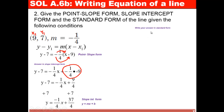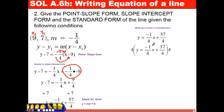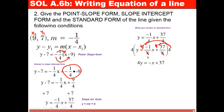Our goal now is to write this into standard form. Multiply both sides by 4, distributing 4 to each term. The denominators cancel out, giving 4y on the left, and negative x plus 37 on the right. We add x on both sides to get x plus 4y equals 37. This will be our standard form.